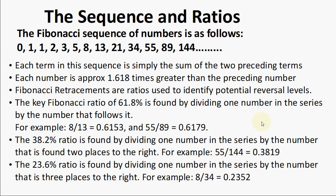The sequence and ratios. The Fibonacci sequence of numbers is as follows: 0, 1, 1, 2, 3, and so on and so forth. Each term in this sequence is simply the sum of the two preceding terms. So 0 plus 1 gives you 1; 1 plus 1 gives you 2; 1 plus 2 gives you 3; 2 plus 3 gives you 5; 3 plus 5 gives you 8. That is how these numbers were generated, and this sequence continues indefinitely, infinitely.